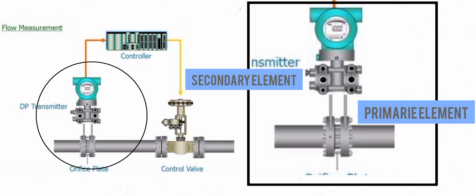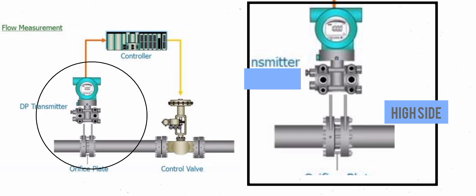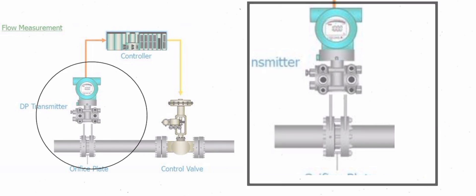The primary element is sometimes called the high side, and the secondary element is called the low side. It is important to remember that the high side and low side aren't always on the respective high and low pressure sides of the pipe.